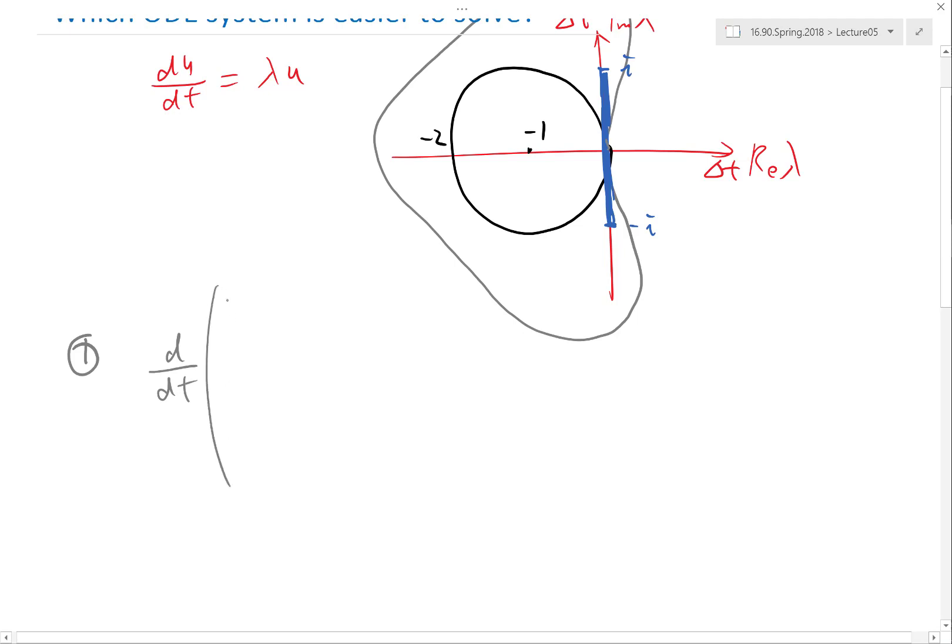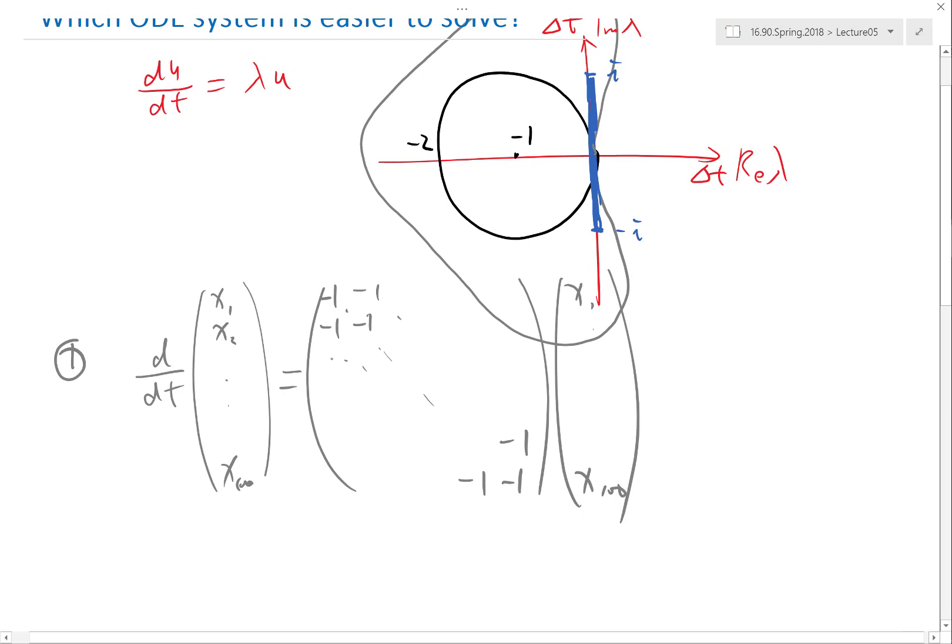d/dt of the vector [X₁, X₂, ..., X₁₀₀] - I have a hundred systems - equals a matrix. Let's say I get a tri-diagonal system. I have minus one on the diagonal, and minus one here and minus one here, times the vector [X₁, ..., X₁₀₀]. I just have minus one everywhere on the three diagonals and zero everywhere else. This is one system.